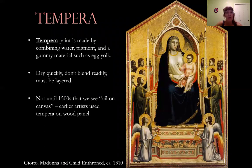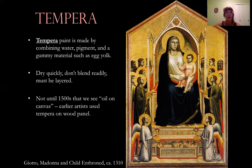Tempera paint is made by combining water, pigment, and a gummy material such as an egg yolk. These dry really quickly, they don't blend easily, and they must be layered if you want any kind of volume or blending. They don't sound quite as fun as oil painting, which we'll get to in a moment. Oil paintings were not invented until the 1500s, so at this point, if you see anything on a panel, it's going to probably be a tempera paint.